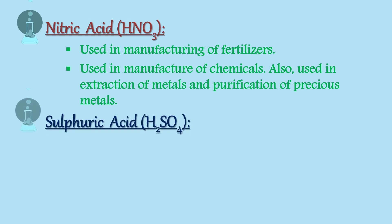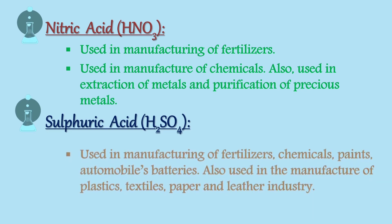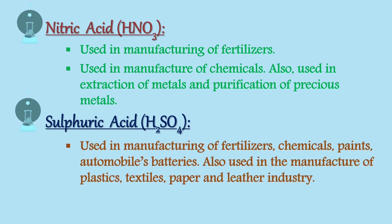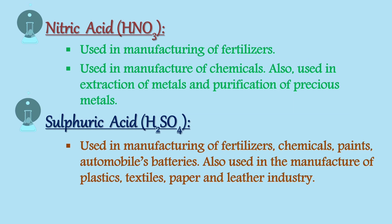Sulphuric acid: Sulphuric acid is used in manufacturing of fertilizers, chemicals, paints, and automobile facilities. It is also used in the manufacture of plastics, textiles, paper, and the leather industry.